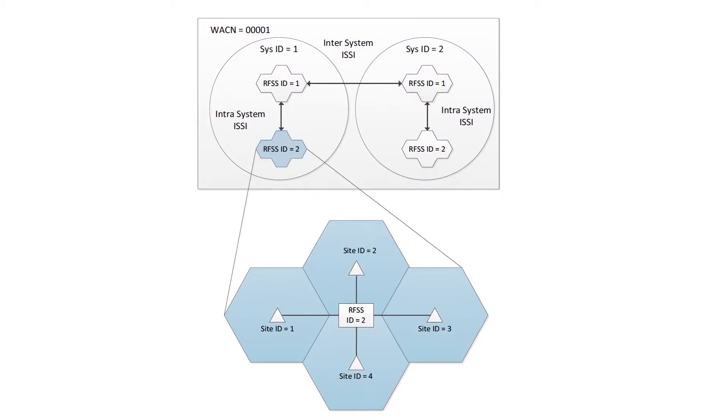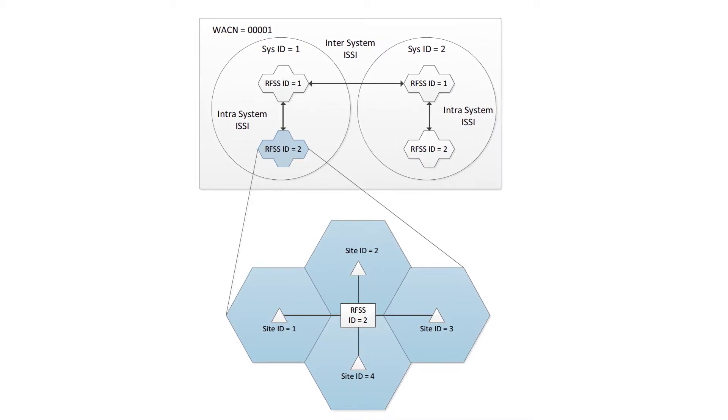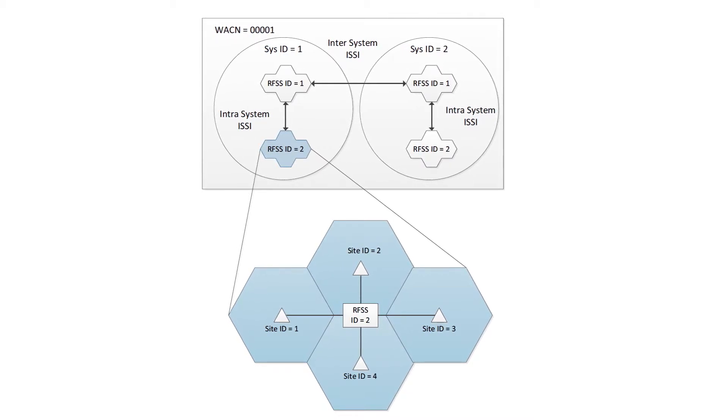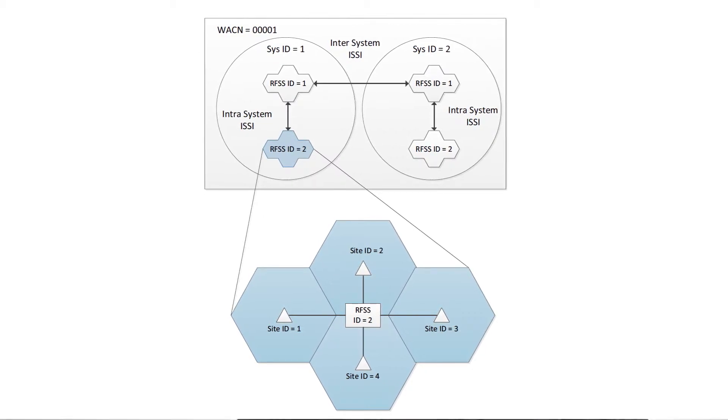It is possible for more than one organisation to install a P25 trunk system in the same area. Each system could have many sites but would still be a unique radio frequency subsystem. A wide area network may be created by joining smaller radio frequency subsystems together. An individual radio or subscriber unit may or may not be permitted to roam from one RFSS to another. Therefore, it's important that the radio can identify what system a particular site belongs to. Each site has a control channel that is constantly broadcasting messages that identify both the site and the system that site belongs to.